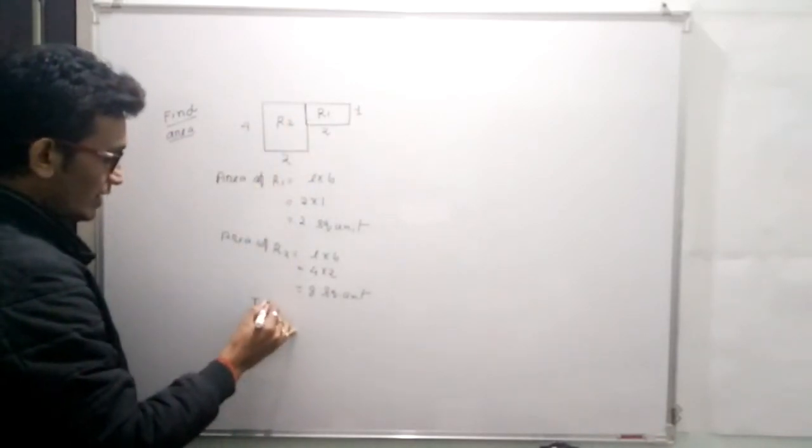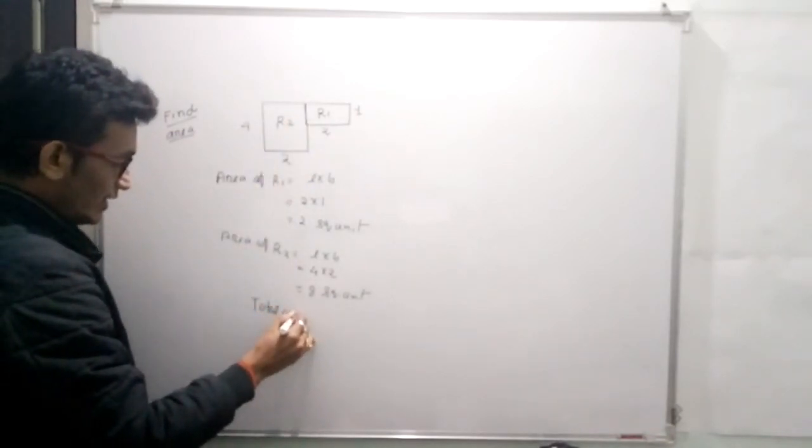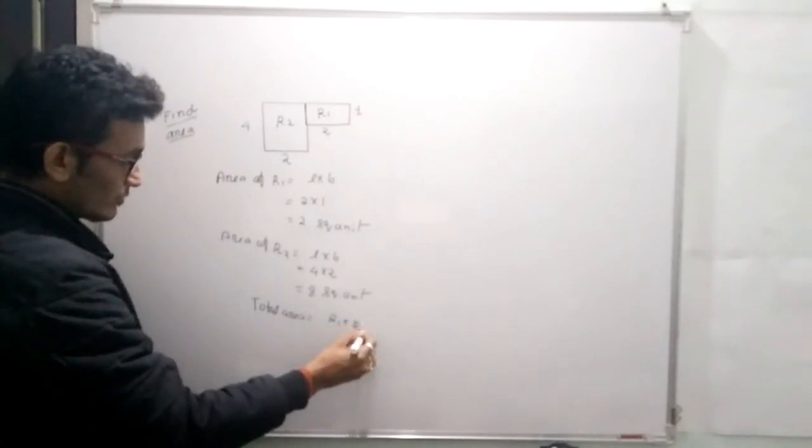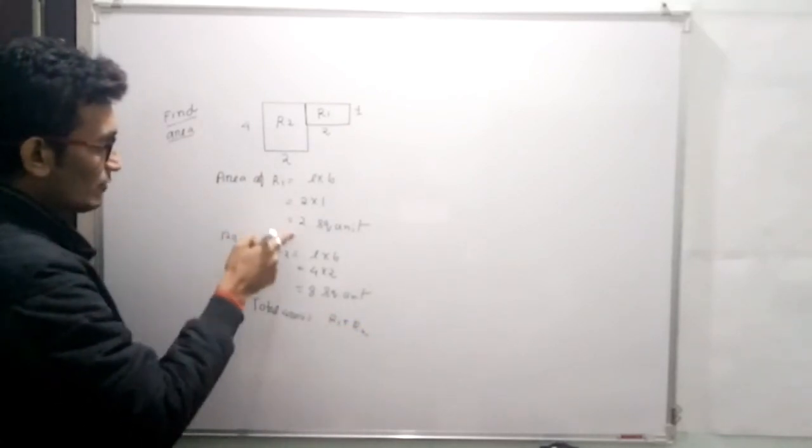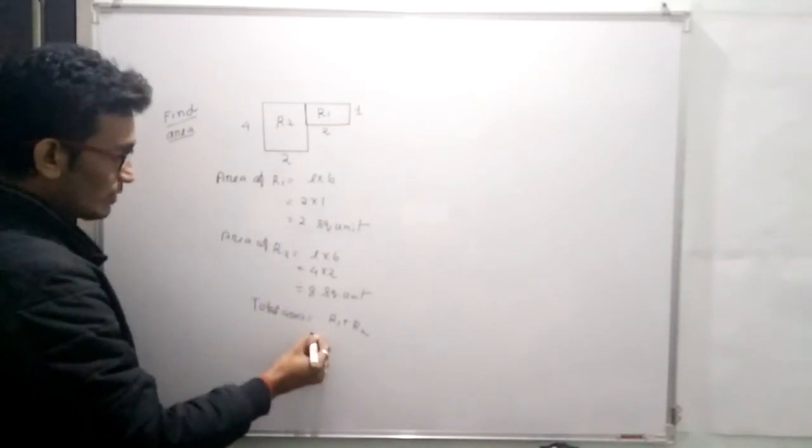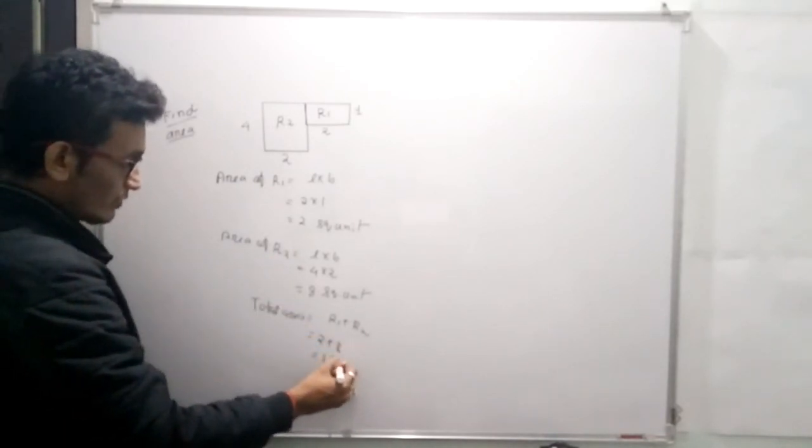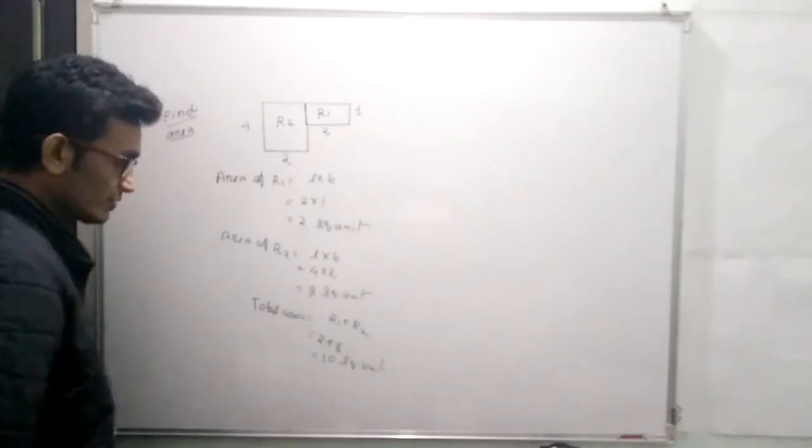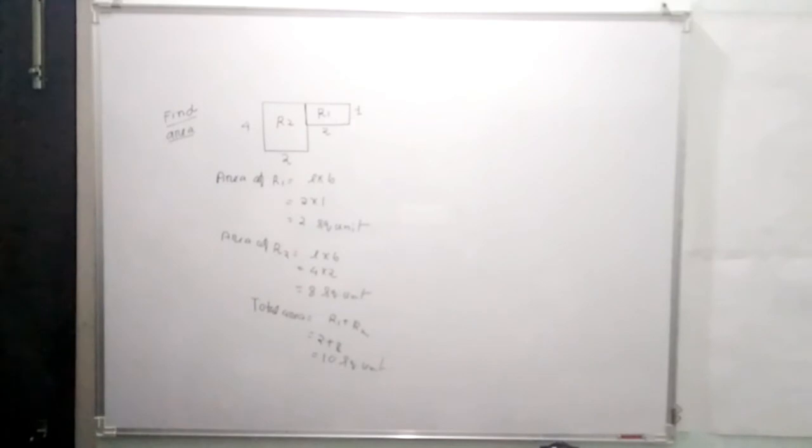So total area equals R1 plus R2. Simply add the area of R1 with the area of R2: 2 plus 8 equals 10 square units. I'll see you next time.